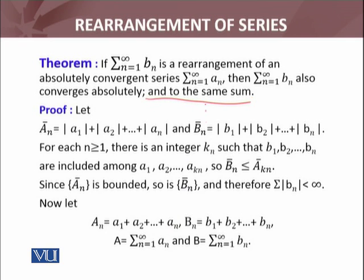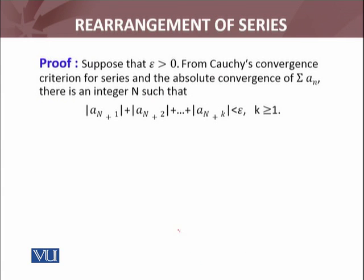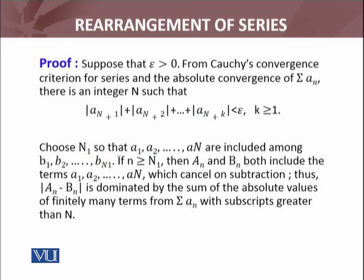Therefore summation b_n is convergent. Now let A = a_1 + a_2 + ... and B = sum of b_n. I need to show that these converge to the same sum — that A equals B. Suppose epsilon greater than zero. From Cauchy's convergence criteria, since both series are convergent, choose N_1 so that a_1, a_2 up to a_n are included among b_1, b_2, ..., b_{N_1}. If n is greater than N_1, then both A_n and B_n include all the terms a_1, a_2 up to a_n.